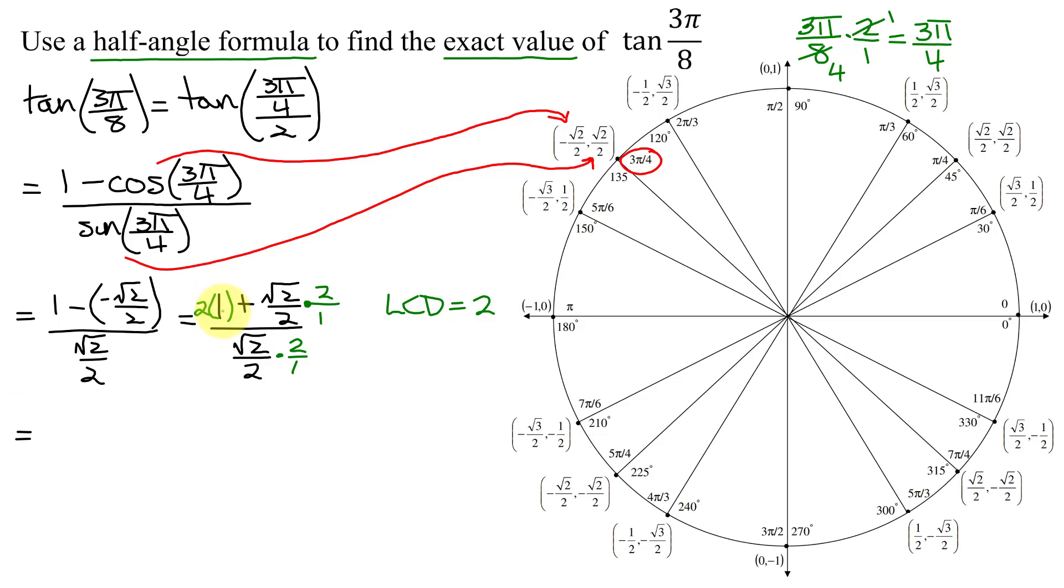So now I get 2 times 1 is 2 plus these 2's reduce and I just get left with the square root of 2, all divided by again just the square root of 2.